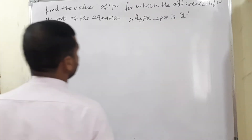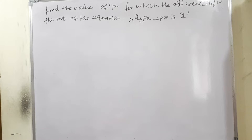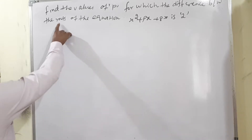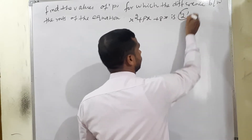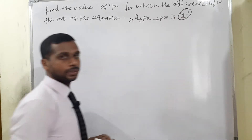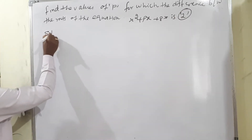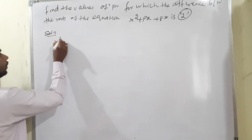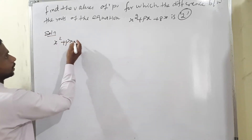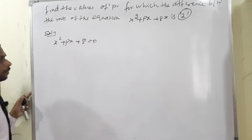Moving to example 2.23: find the values of P for which the difference between the roots of the equation is 2. The given equation is x² - Px + 8 = 0.